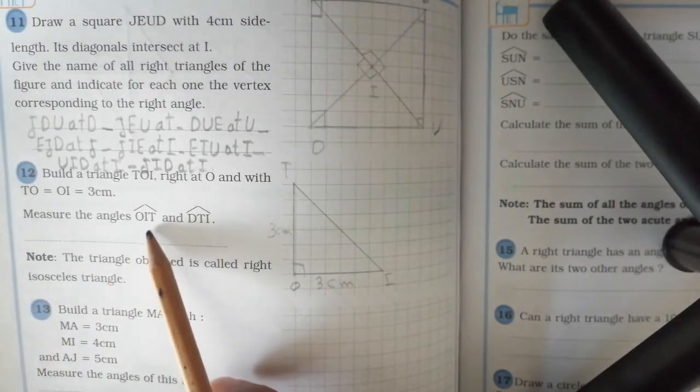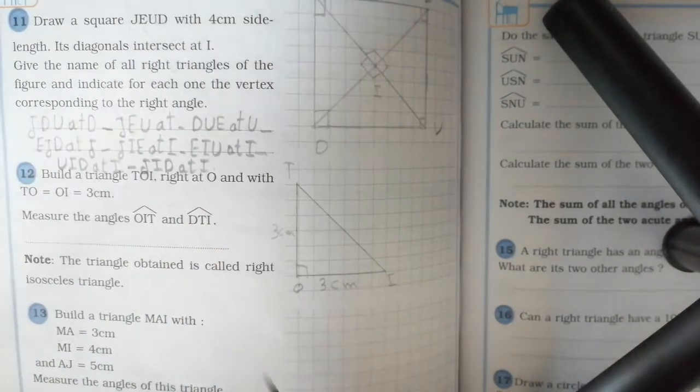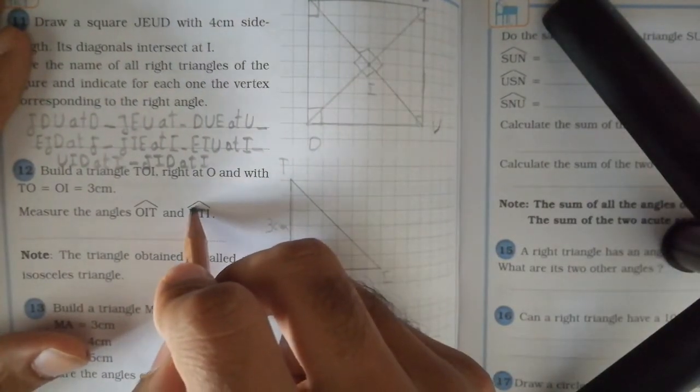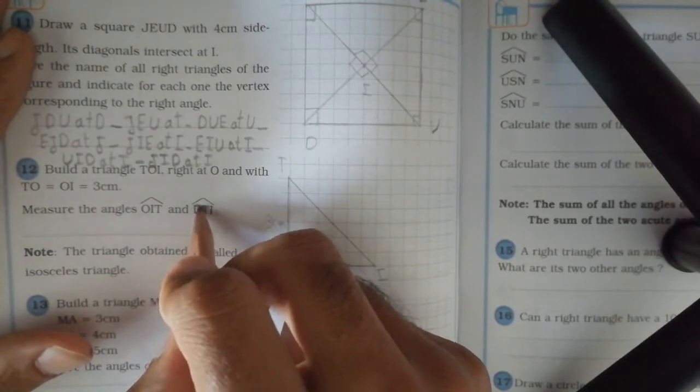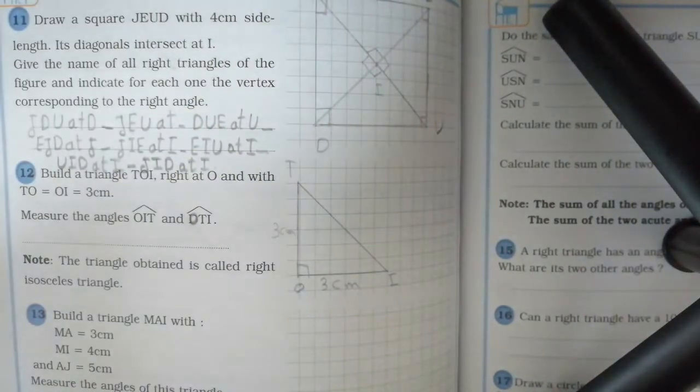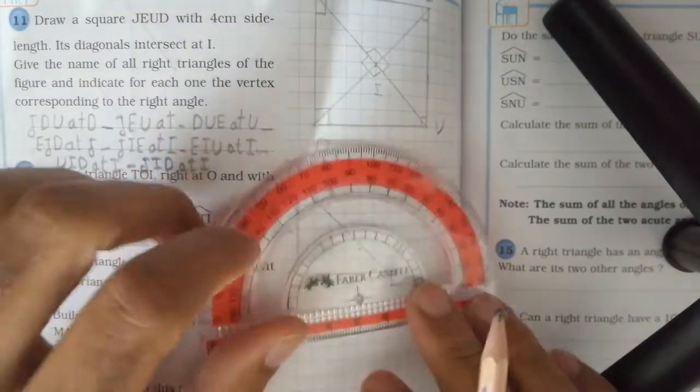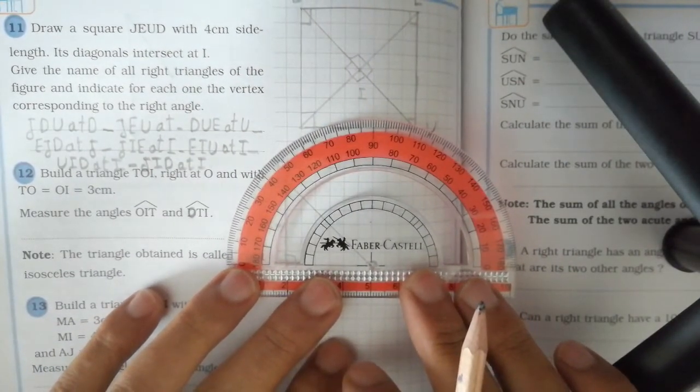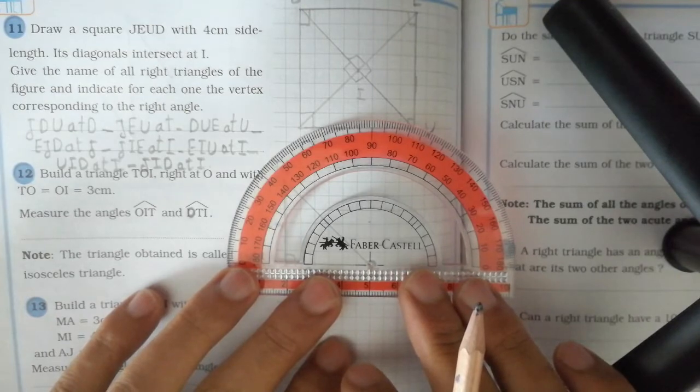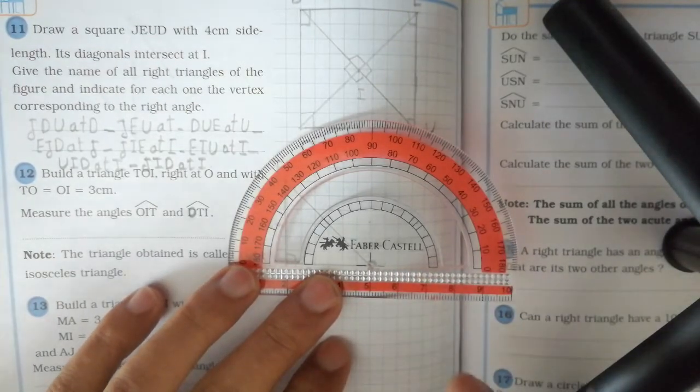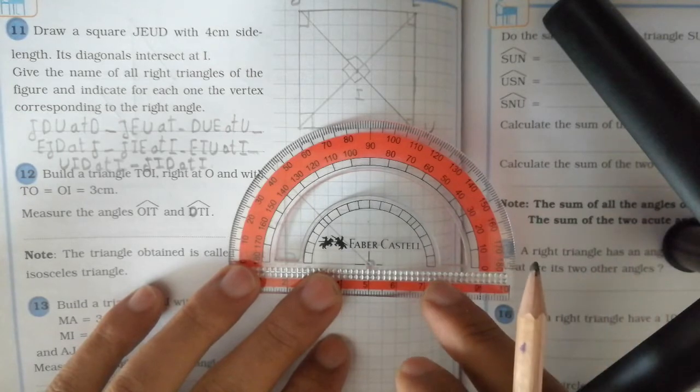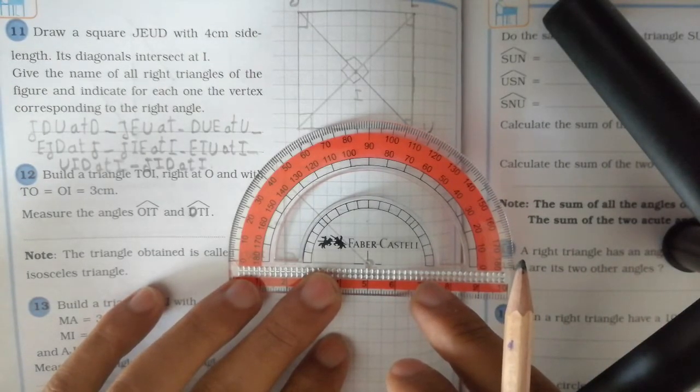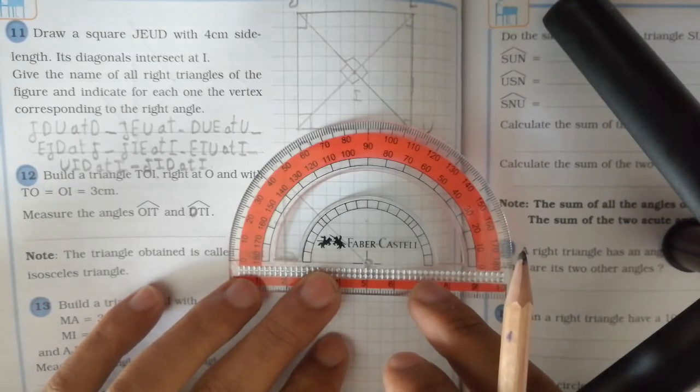Then measure the angles OIT and OTI. First, this angle is called OTI, not DTI. Using the protractor, put it on point I and start from zero on the side TI, IO.